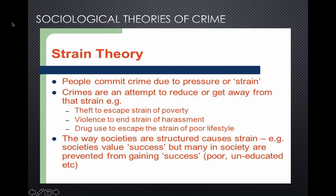The strain theory says people commit crime due to pressure or strain, and crimes are an attempt to reduce or escape that strain — for example, theft to escape the strain of poverty, violence to end the strain of harassment, and drug use to escape the strain of a poor lifestyle. The way societies are structured causes strain.